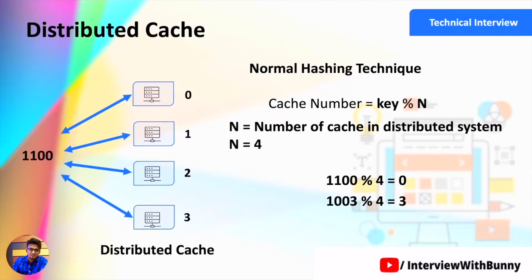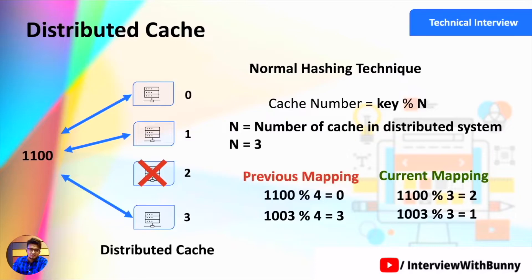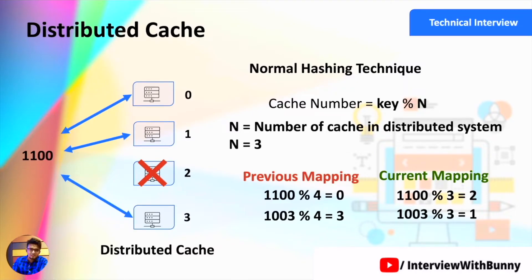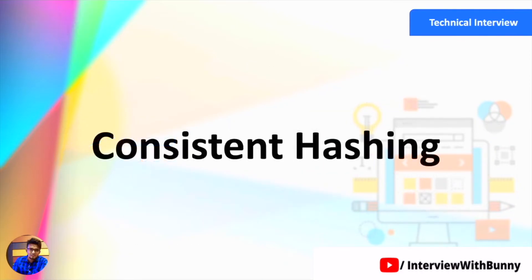In this way we create a mapping between the data request and the caching server where it is located. However, there is a problem with normal hashing. If one of the caching servers goes down or gets corrupted, all data on that server is lost and the normal hashing technique also breaks down. For example, if we pass data ID 1100 through the hashing function now, it maps to server 2, whereas the actual data resided on server 0. The mapping is wrong because the number of cache servers changed. This entire mechanism fails if any caching server has a problem, so we need a better general mechanism — and that is why we use consistent hashing.